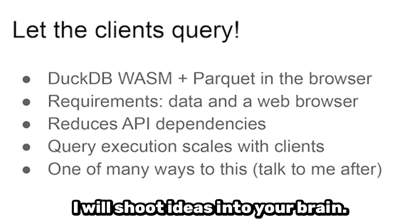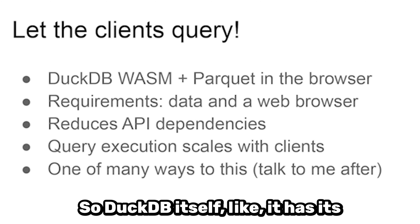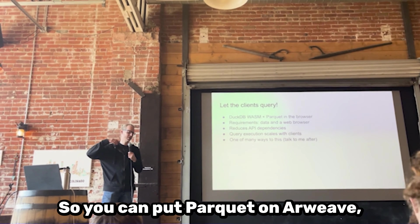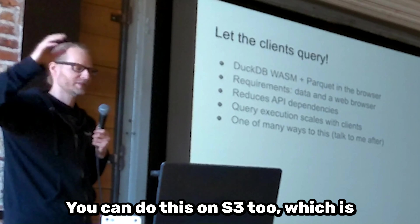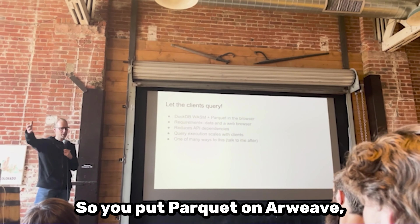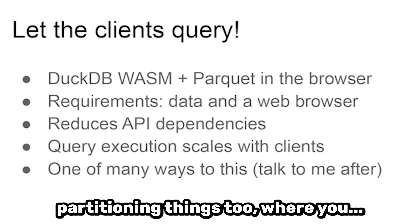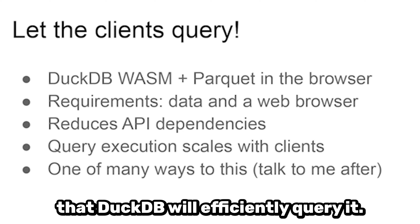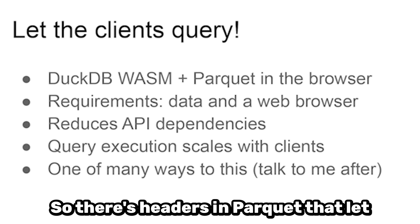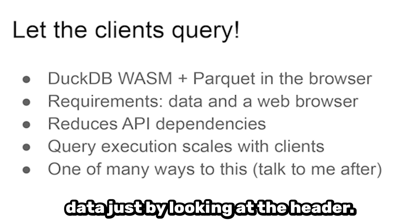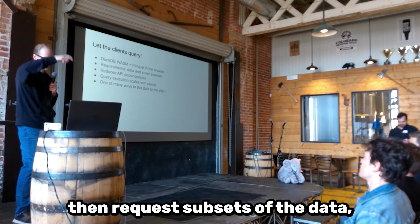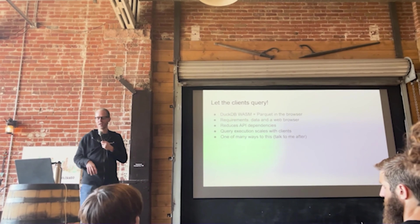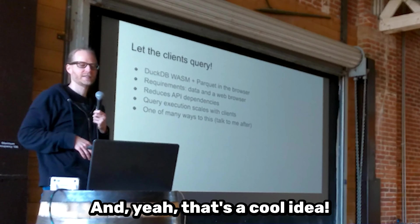The other super cool thing about building this way is your query execution scales with the number of clients. As long as they can retrieve the data, you can execute as many queries as you want on the client. DuckDB has its own data format but can also read parquet, which is just a columnar data format. You can put parquet on Arweave, point DuckDB at it, and DuckDB will efficiently query it — there are headers in parquet that let you determine subsets of the data just by looking at the header, so it does range requests rather than pulling down the whole file. This opens up design space I haven't seen people explore a lot yet.